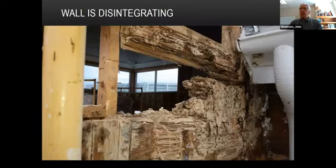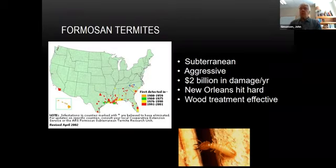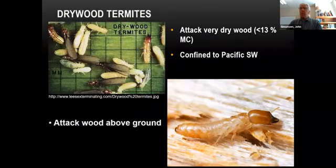Subterranean termites can be very destructive. Formosan termites are also very aggressive — they've caused a lot of damage, especially in New Orleans. But they are susceptible to standard wood treatments for termites. So even though they're aggressive in expanding the colony fast and causing lots of damage, they're not any more difficult to control than other kinds of termites.